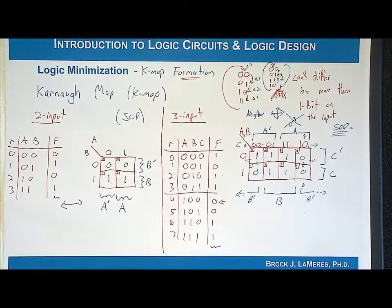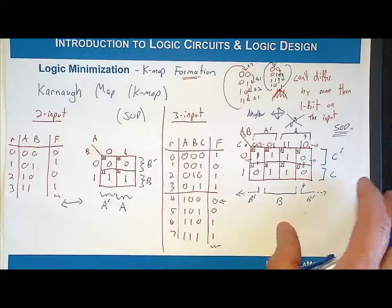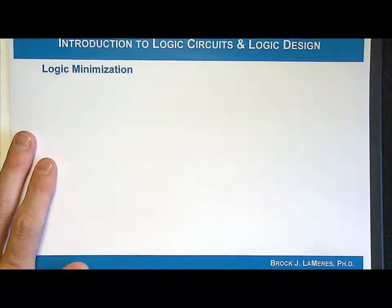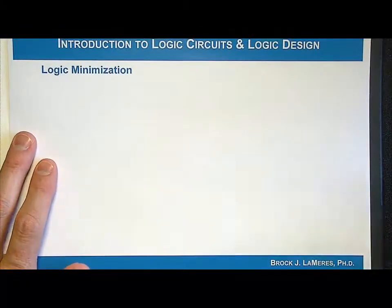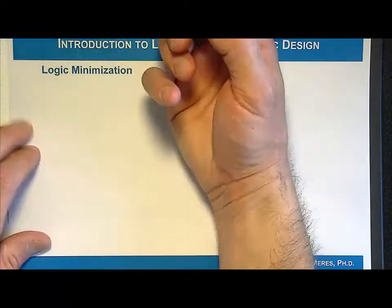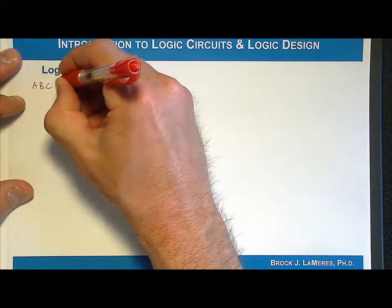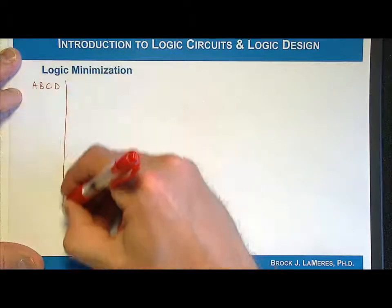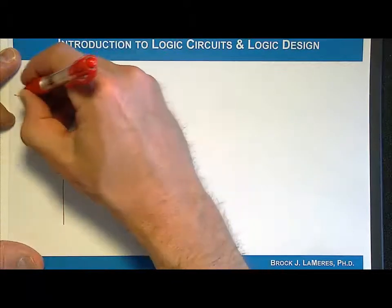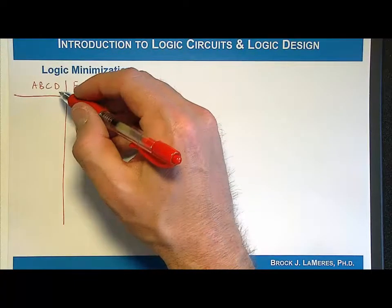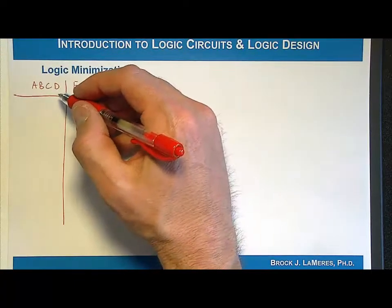The last one we look at is a four-input K-map. This is very similar to the last two, just with more cells. We have four inputs — A, B, C, and D — with an output F. With four inputs there are 2-to-the-4, or 16 possible input codes.